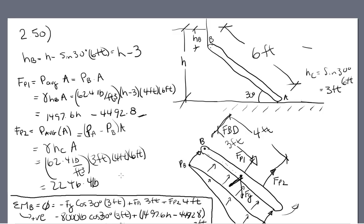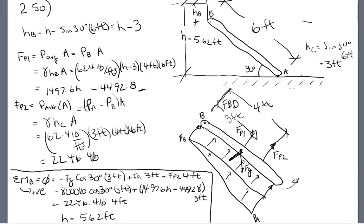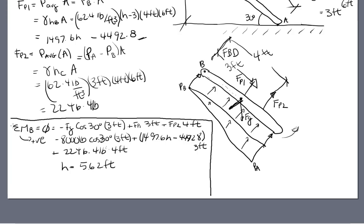So when H, this value here, equals 5.62 feet, there will be just enough pressure on an 8,000 pound gate to lift it, to get it to come off its rubber seal at A. And that is how you solve this problem. Send me an email if you have any questions.